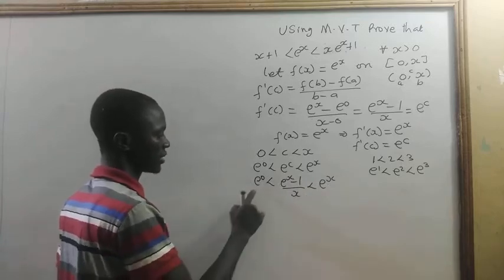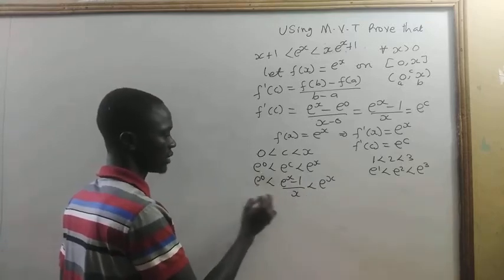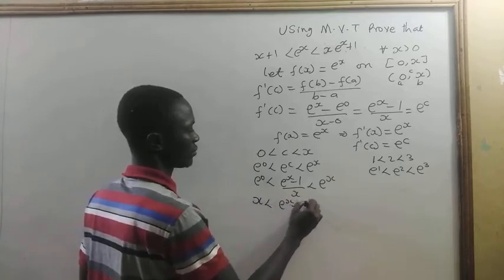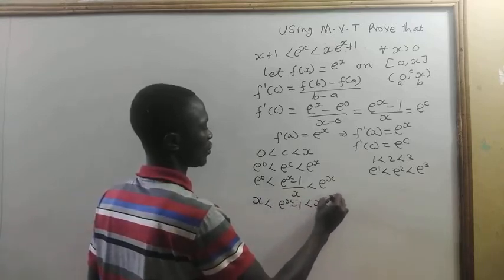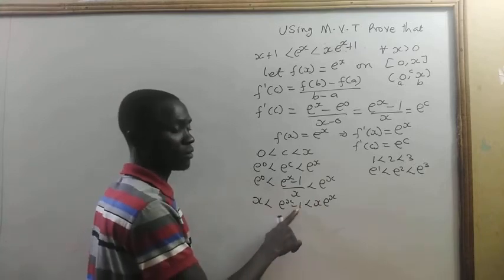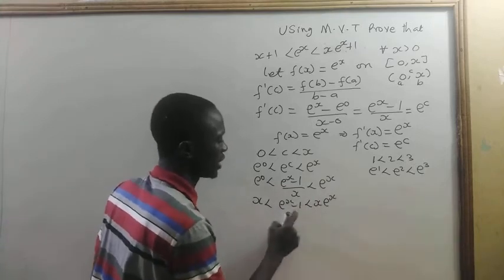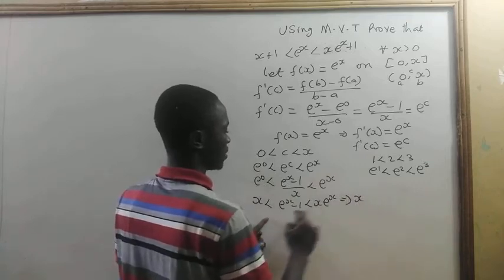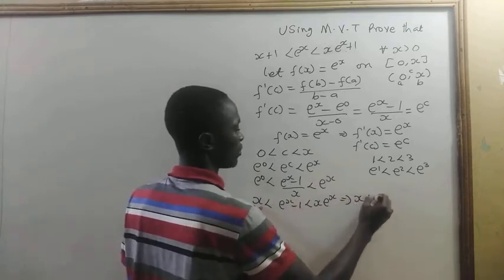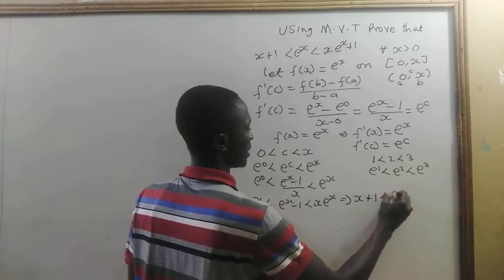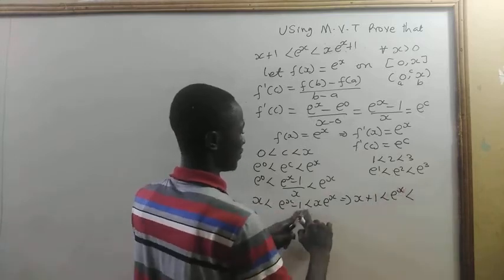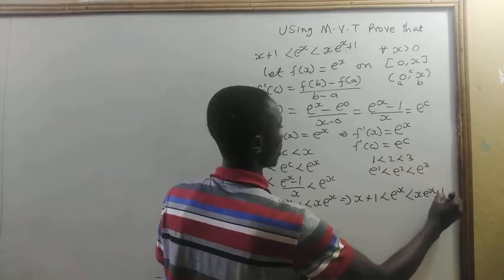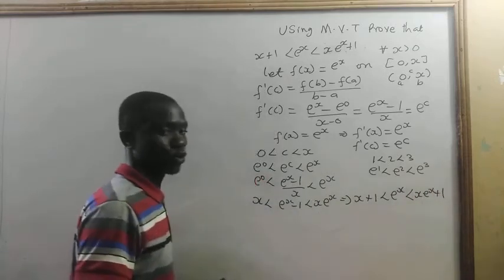Multiplying through by x: e to the power 0 times x is x, so x is less than e to the power x minus 1, which is less than x times e to the power x. Adding 1 across the inequality: x plus 1 is less than e to the power x, which is less than x times e to the power x plus 1.